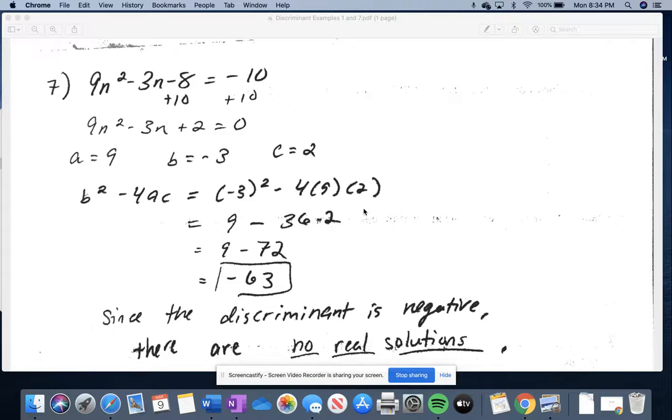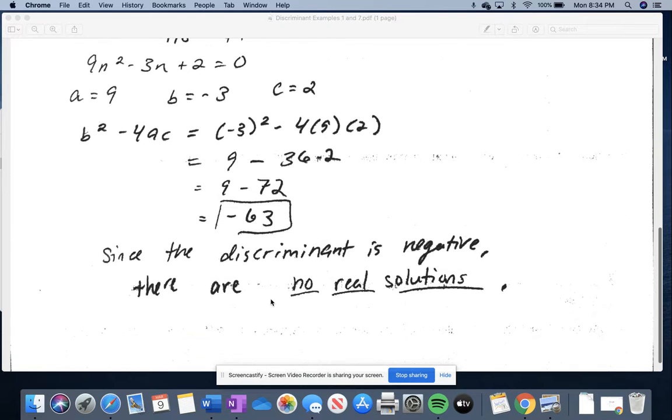And then we just simplify that. So negative 3 squared is 9, minus 4 times 9 is 36, and then we're going to need to multiply that by 2. So 36 times 2 is 72. 9 minus 72 is negative 63.